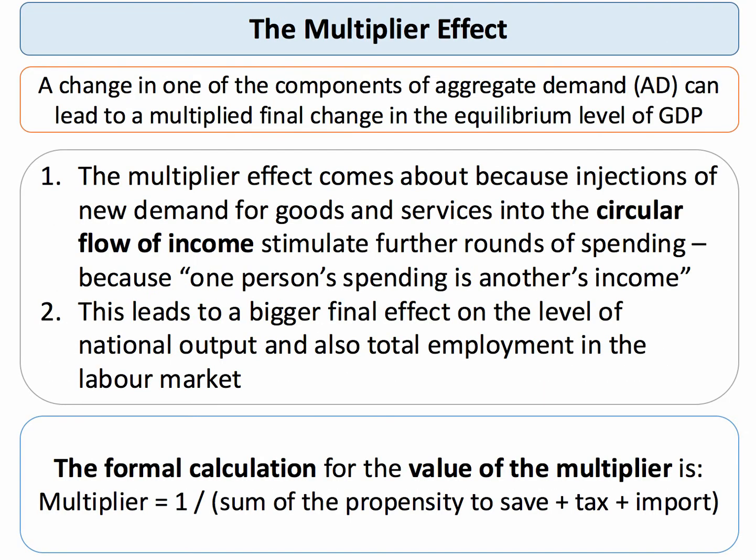A multiplier is the other way around — it's the effect of investment on the level of GDP. So a change in one or more of the components of aggregate demand — could be exports, could be government spending, could be investment — is likely to lead to a bigger final change in GDP.